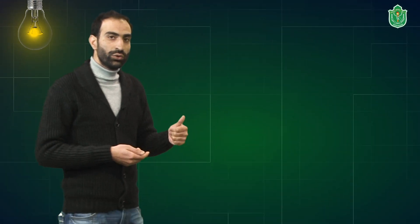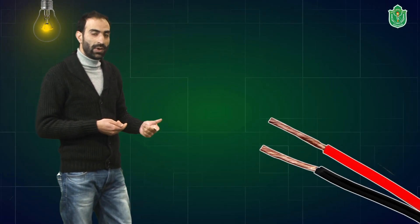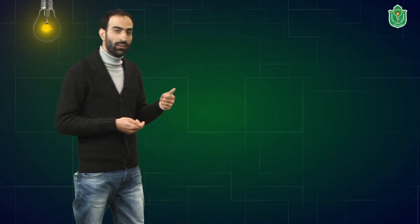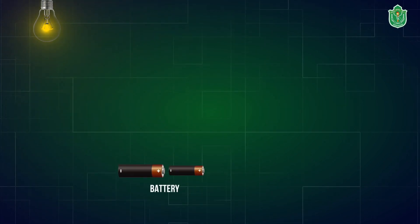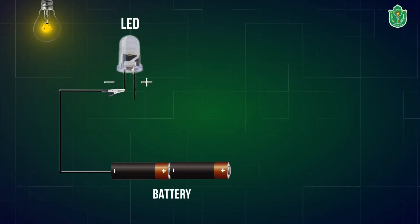The steps we need to follow to construct the circuit are as follows. In our first step, we are going to remove the insulation from one of the copper wires on both ends and connect one end to the negative terminal of the cell and the other end to the negative terminal of the LED.